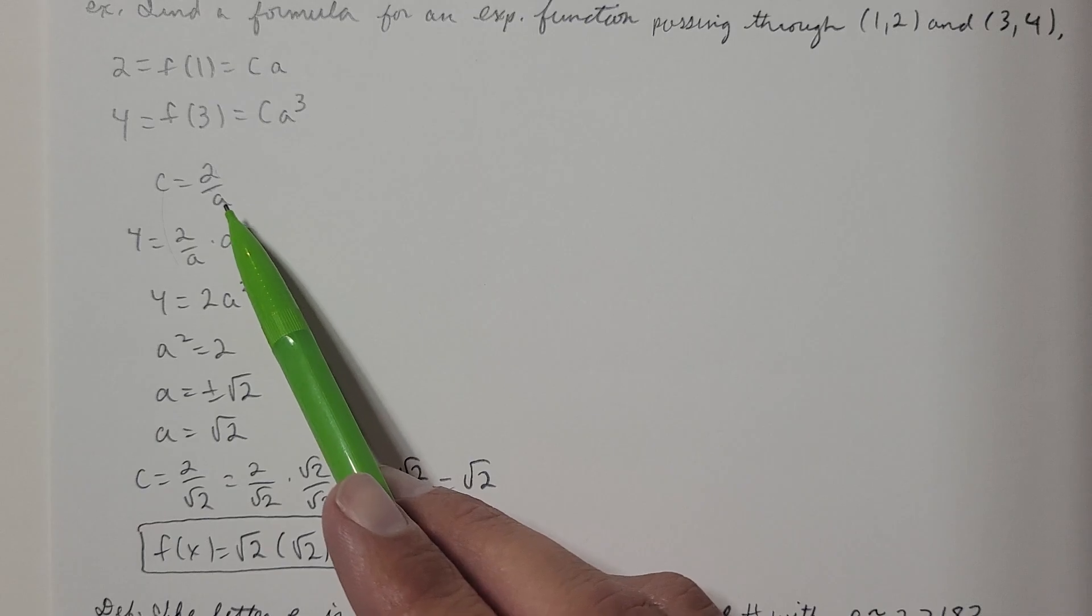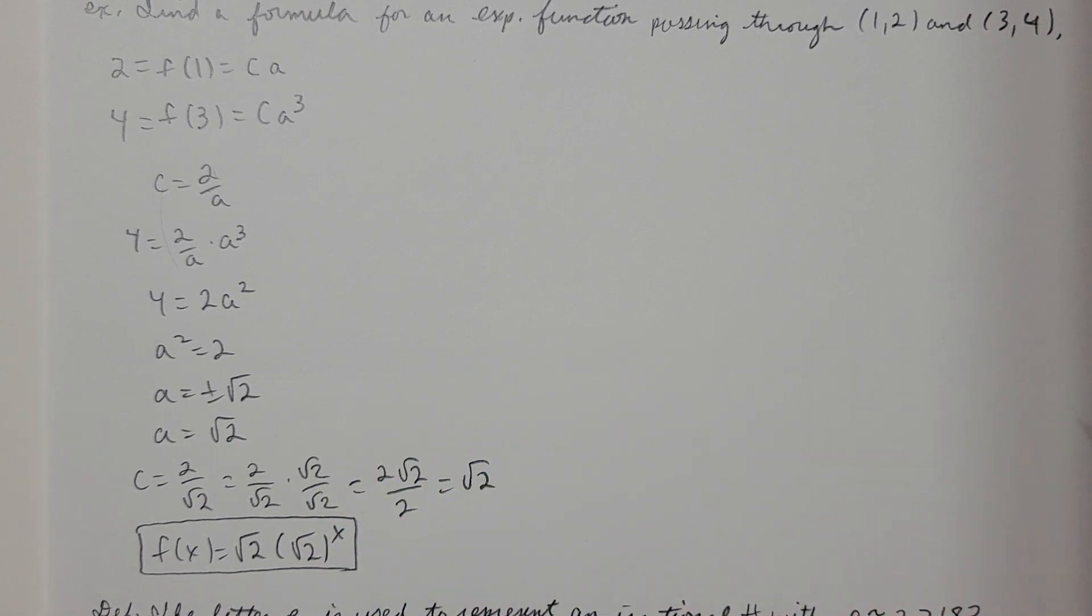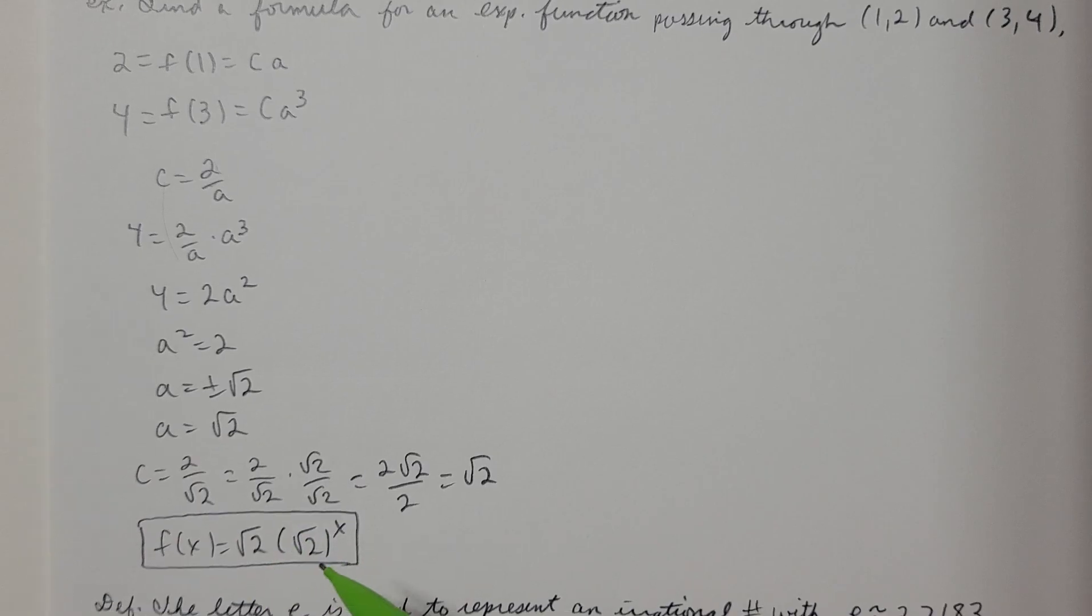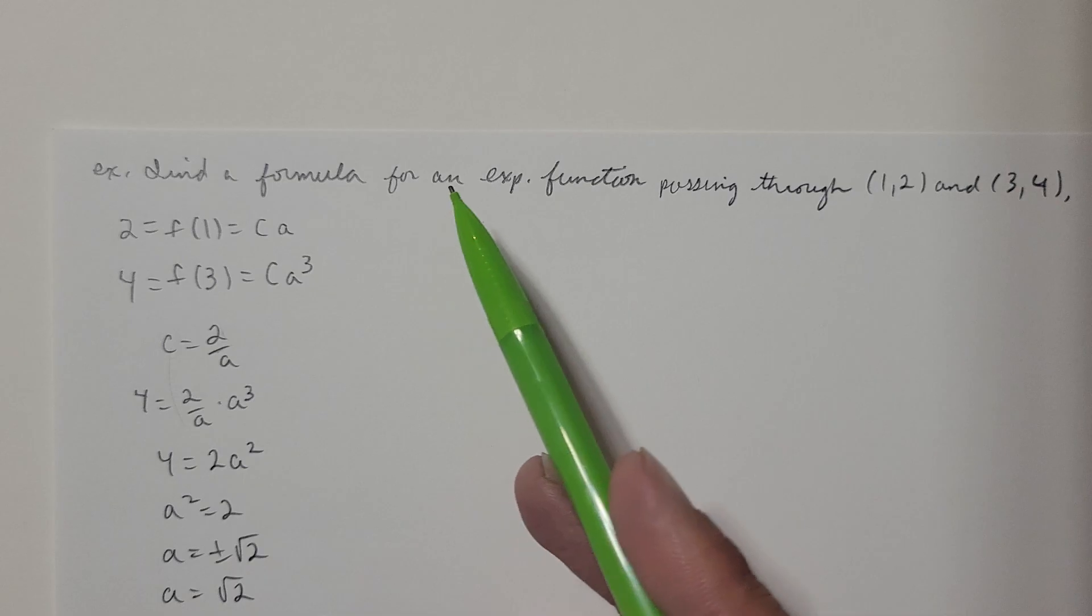And knowing that a is root 2 means that c would be 2 over root 2. And I'm going to go ahead and rationalize the denominator on this. So rationalizing the denominator just means get rid of the radical that we currently see in the denominator. So to make that happen, let's go ahead and multiply the top and the bottom of this by root 2. Root 2 over root 2 is 1. So I'm not changing anything if I'm multiplying by 1. I have root 2 times root 2 is 2. And up top I have 2 root 2. So the 2's cancel, leaving me with root 2 for c. So a is root 2. Also c is root 2. So I have the function c times a to the x. That'd be root 2 times root 2 to the x. Go ahead and circle that function. That'd be the formula that we need there.